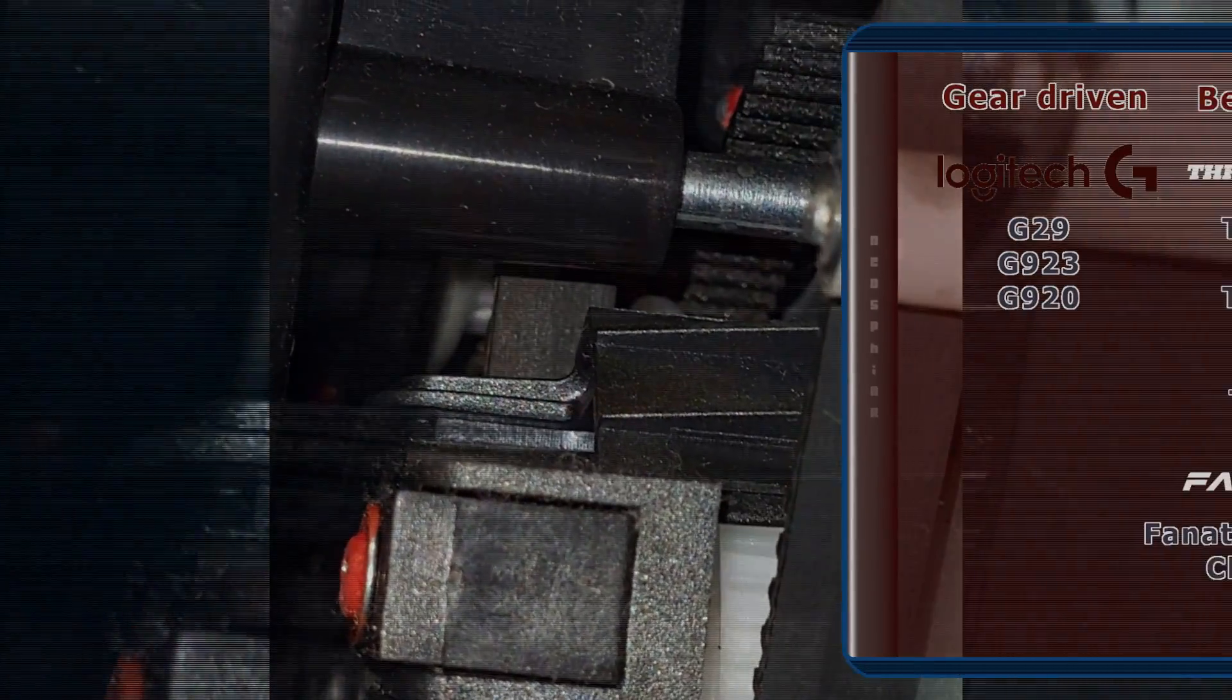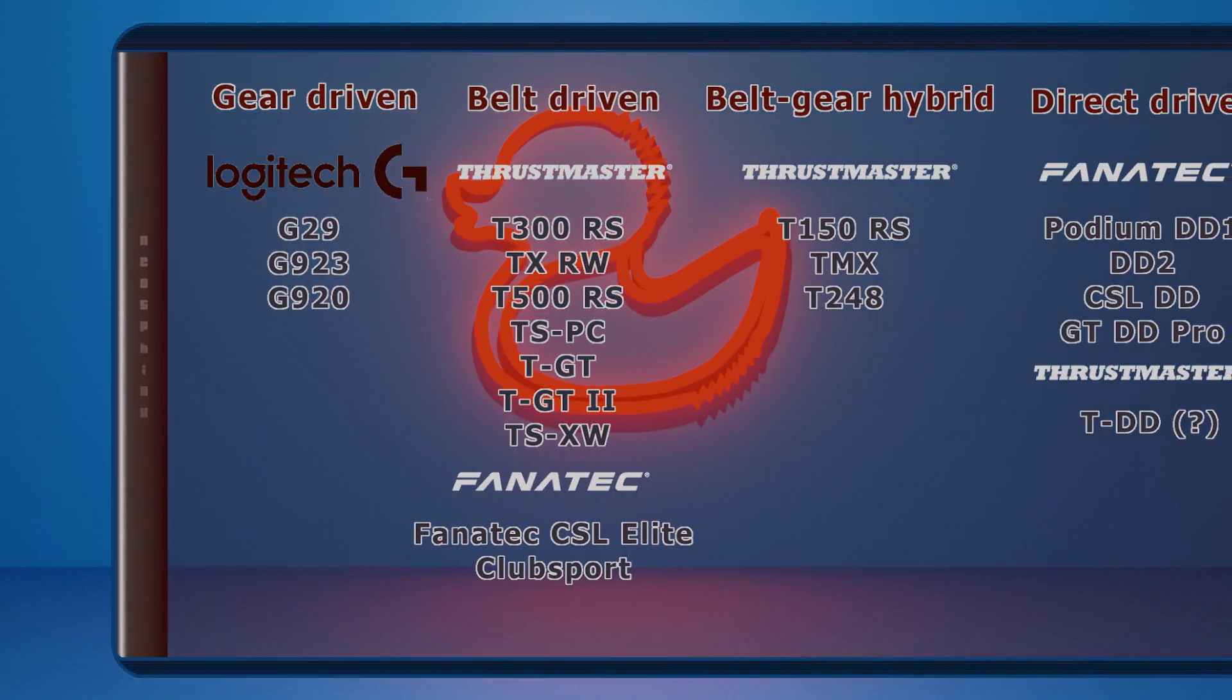So there are four different drive mechanisms in use at the moment. We have the gear driven with Logitech G29, G920, and G923. We have the belt gear hybrid driven like the Thrustmaster T150RS, TMX, the T248.